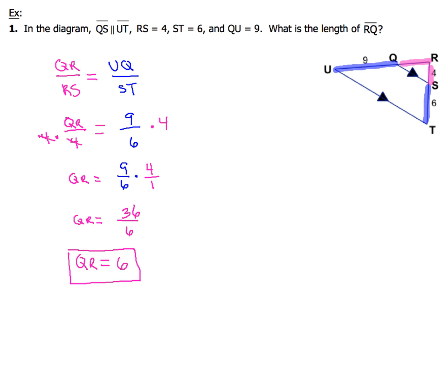Now this isn't the only way to do this problem. Some people may have preferred, instead of this step right here, to write it like this. When you start out with QR over 4 and then 9 over 6, what some people would like to do is write down 6 times QR equals 9 times 4. So you'll get 6 times QR equals 36, and then when you divide both sides by 6, you end up with QR equals 6. So either way you want to do that, you will end up with the same value for QR. Not too hard, pretty straightforward. Just take your time, make sure you do your arithmetic carefully.